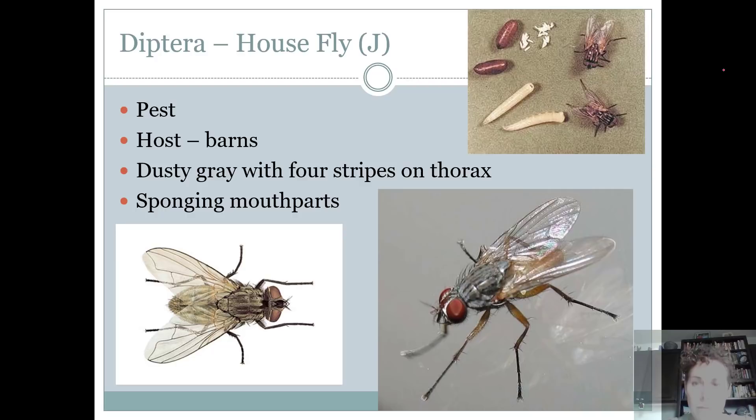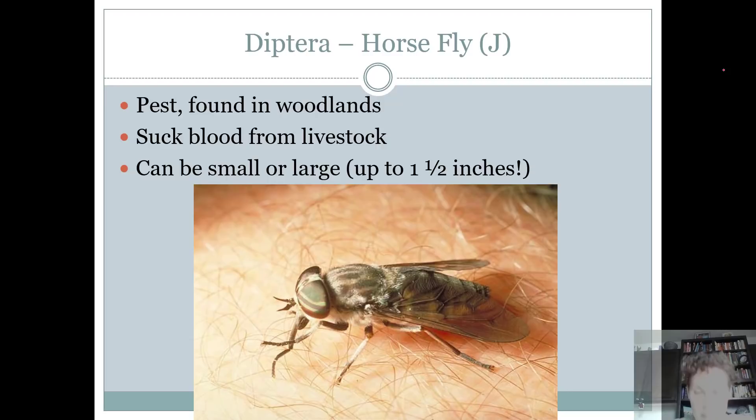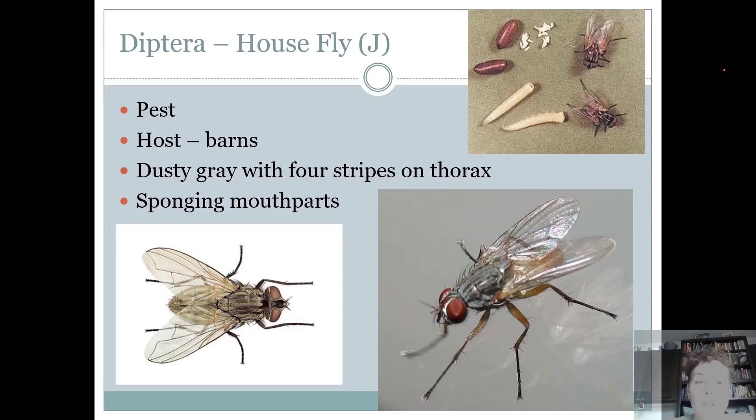Another thing I notice about horse flies is that their eyes are red. They also have more stripes on their back. But really I look at: is there a pattern on the wings? Are the eyes really, really big? Can I see the mouthparts — those long mouthparts that stab like a knife? Or do I see spongy mouthparts? House flies have spongy mouthparts.